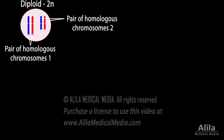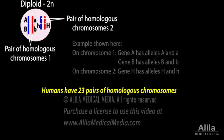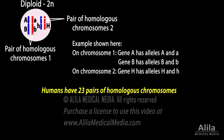Meiosis begins with a diploid parent cell which has two copies of each chromosome called homologous chromosomes. Homologous chromosomes contain the same set of genes but may differ in the variations, or alleles, of each gene. They are homologous but not identical. A diploid cell therefore has two sets of chromosomes, two alleles for each gene.